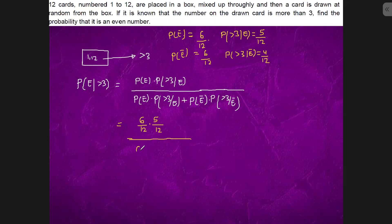So this is 6 by 12 into 4 by 12 plus 6 by 12 into 5 by 12. It will come out to 30 upon 24 plus 30. This is 5 upon 9.